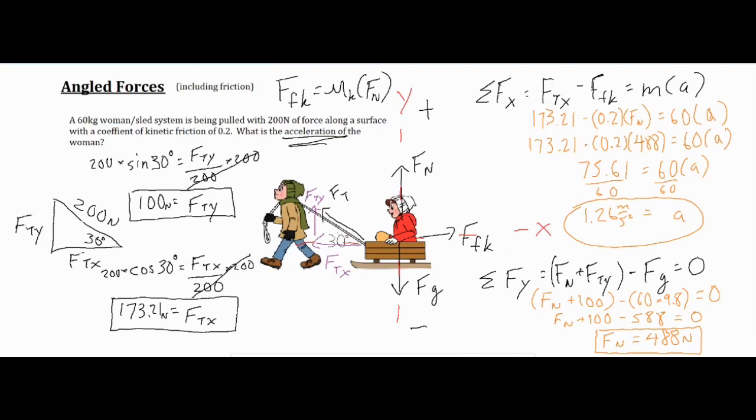Our acceleration came out to 1.26 meters per second squared. All I did is I finished multiplying my coefficient of friction with my normal force and subtracted that from this number, which left me with 75.61 equals our mass times acceleration. I divided both sides by 60 and got 1.26 meters per second squared.